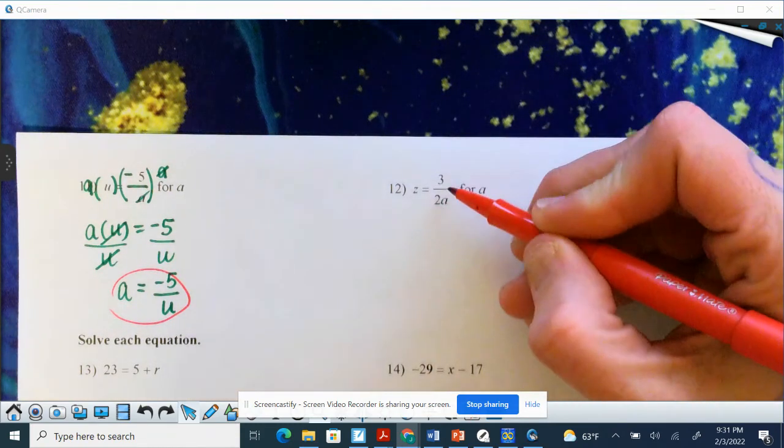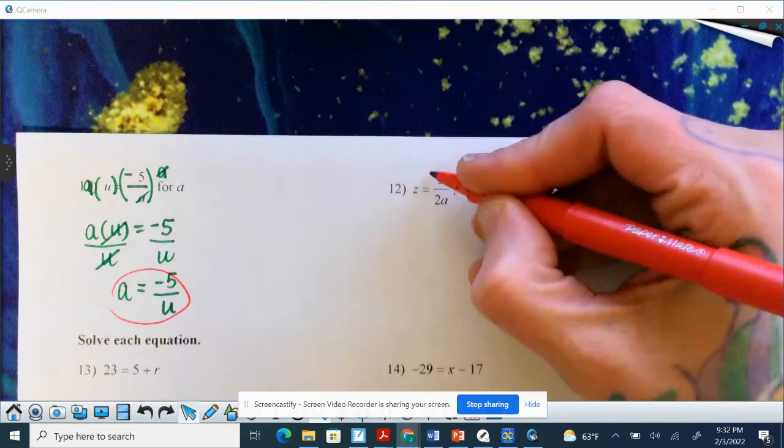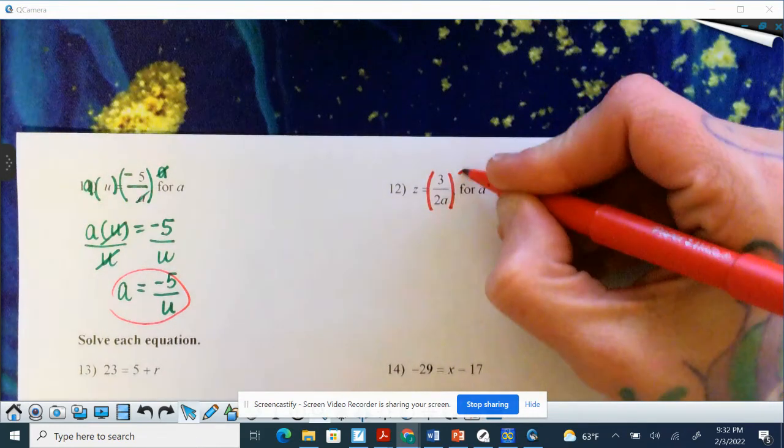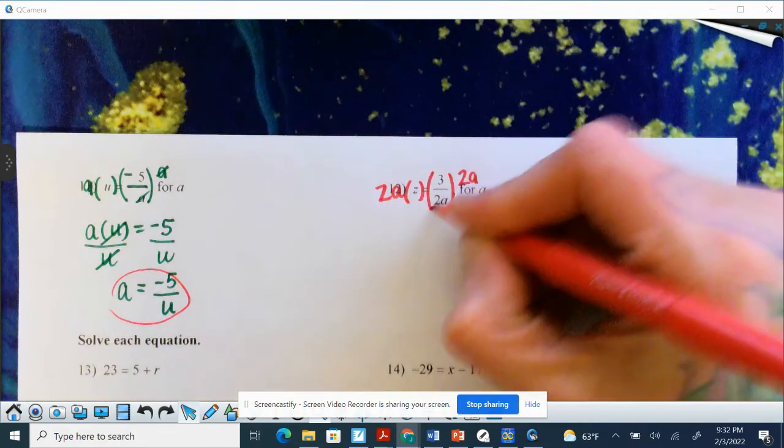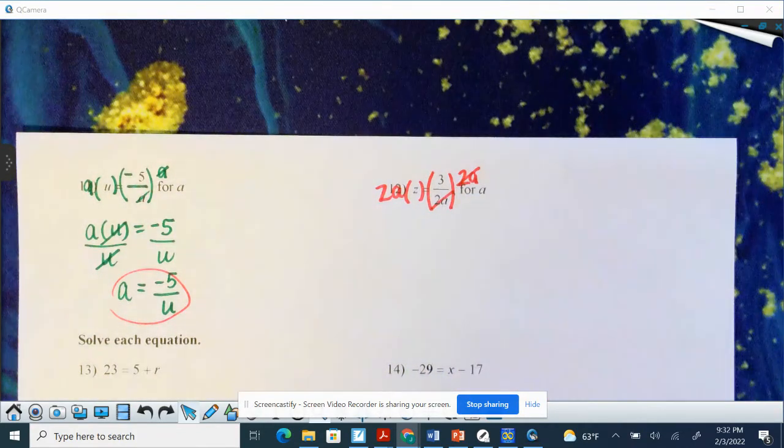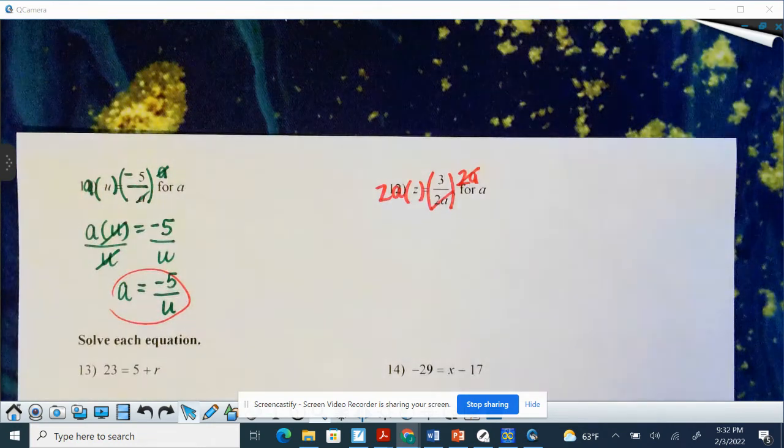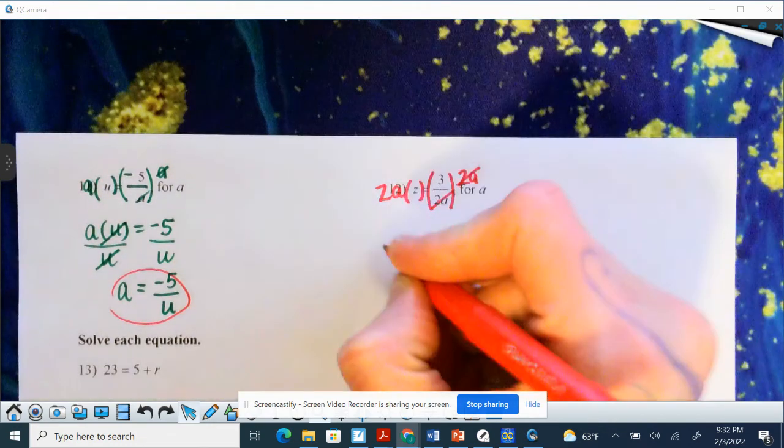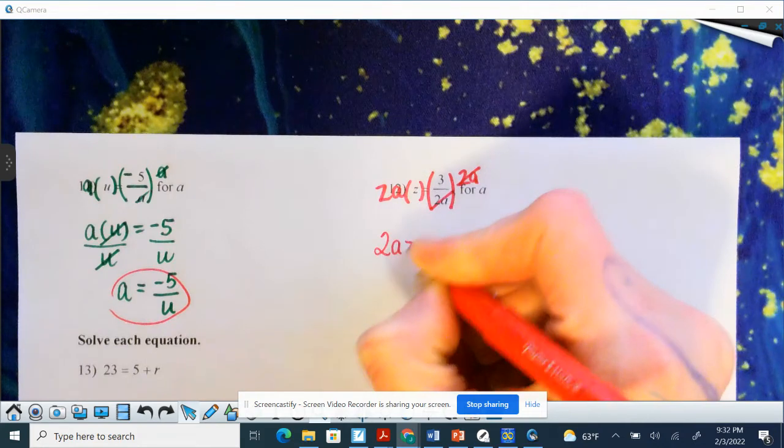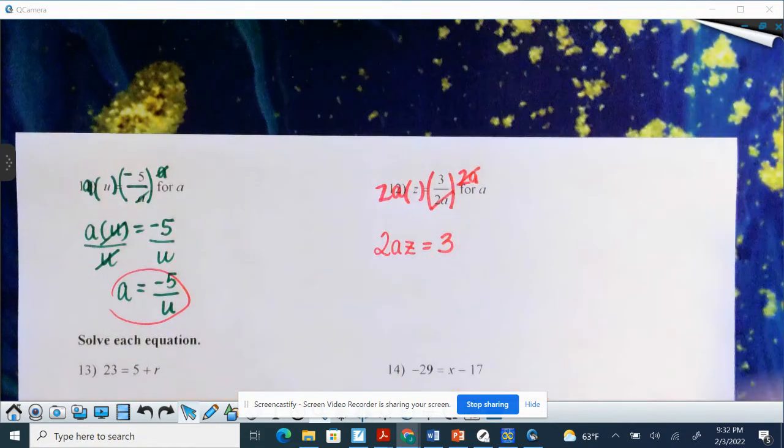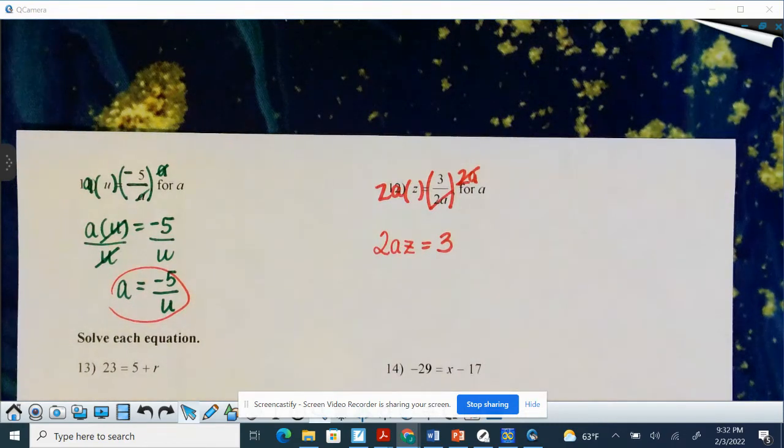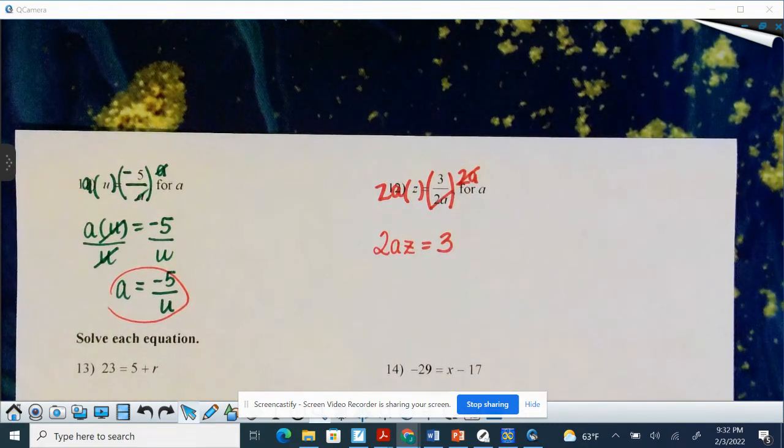a is now at the bottom with 2a. We need 2a out of the basement. So 3 divided by 2a. So we're going to undo that by multiplying by 2a. So these go away. And we multiplied because it is the inverse of division. So we have 2az equals 3. Now this is a little different. I need a by itself. There's all kind of mess over there attached to a. I have a 2 times a and then a times z.